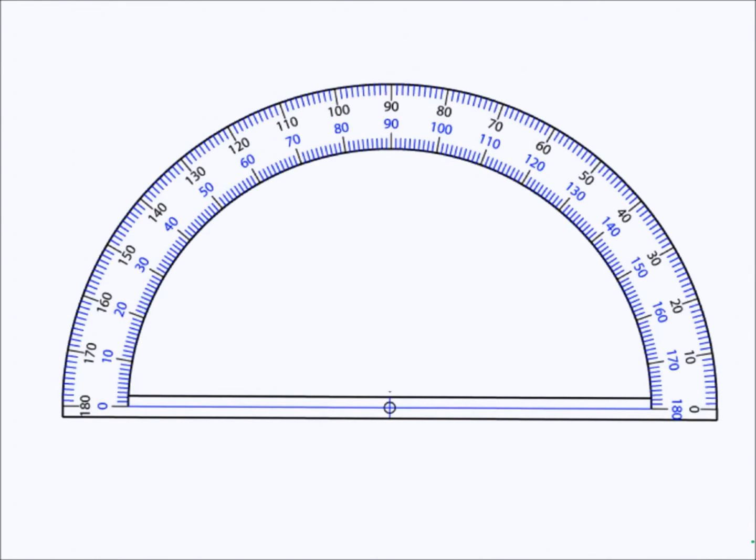Here we have a protractor. It's a tool for measuring angles and it can measure angles from 0 to 180 degrees. If you look carefully there are two sets of numbers. Over on the right hand side they start at 0 and increase to 10, 20, 30, 40, 50, 60, 70, 80, 90, 100 and it goes all the way to 180.